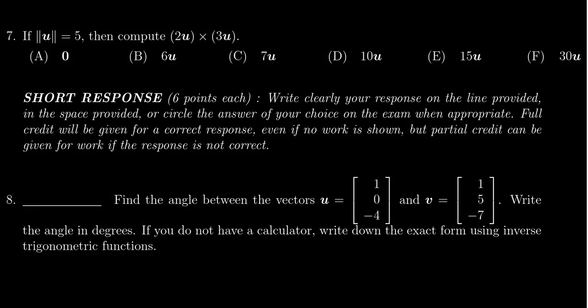In this video, we will provide the solution to question number 7 from practice exam 3 for Math 2270, for which we're given a vector u which has a length of 5, and we're asked to compute the cross product of 2u and 3u.